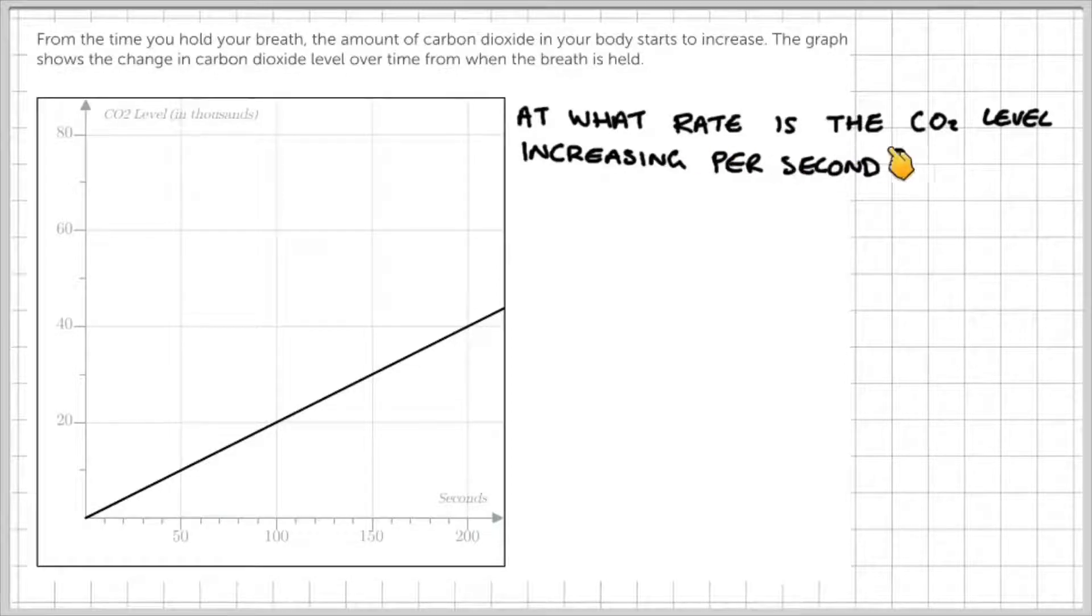The question is, at what rate is the carbon dioxide level increasing per second? So we need to remember from previous videos that the rate of change is equal to the gradient of a line, which basically is the rise over the run.